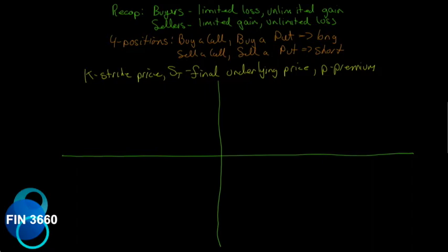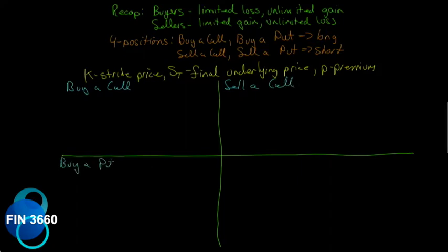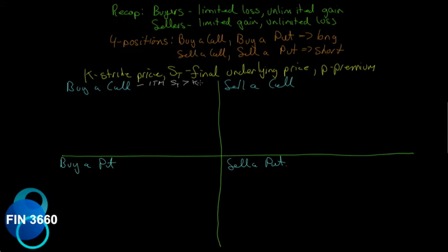We'll grid out the four positions to keep them separate: buy a call, sell a call, buy a put, and sell a put. Selling a call should have the opposite payoff from buying a call. Recall the in-the-money and out-of-the-money discussion: we are in the money on a call when the final underlying price S_t is greater than the strike price K, and out of the money when K is greater than S_t.